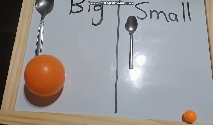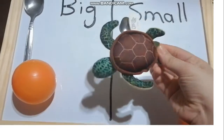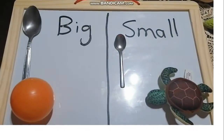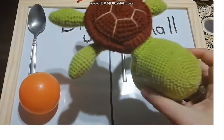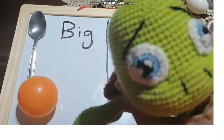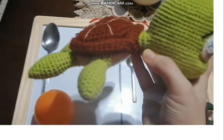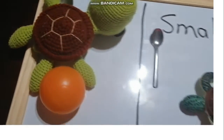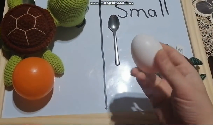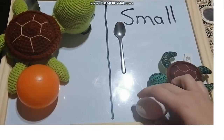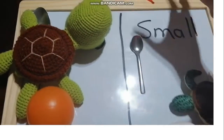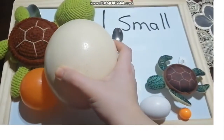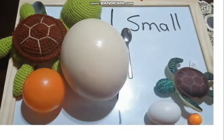Let's see — this little turtle, is it big or small? We will put this one with the small items, and this one we will put with the big items. Now finally the two eggs — this one, small or big? Yes, we will put it with the small ones. And this one, small or big? No, it's big, so we will put it here.